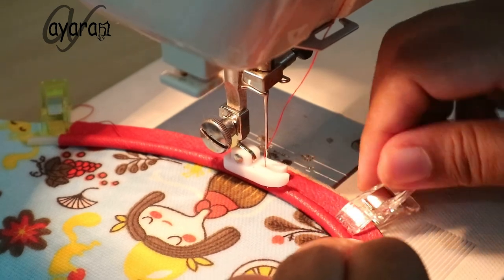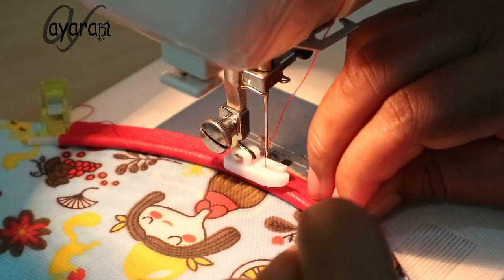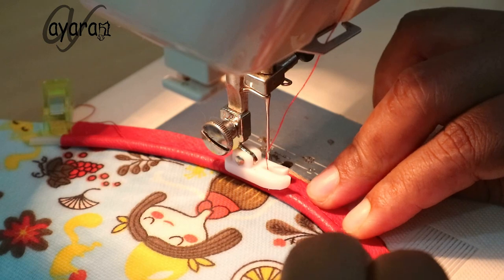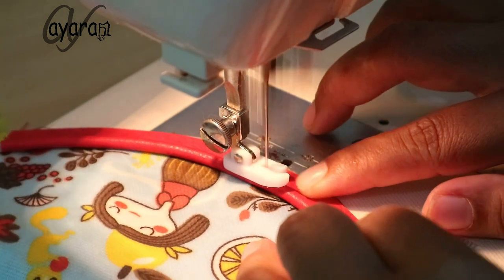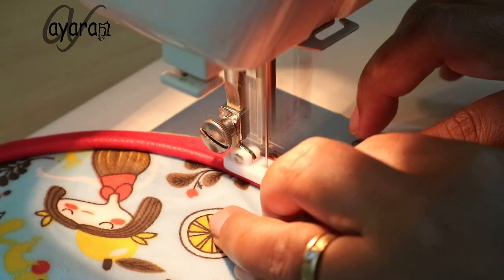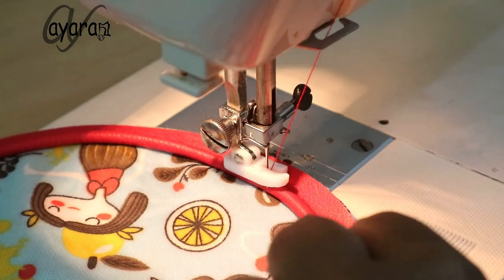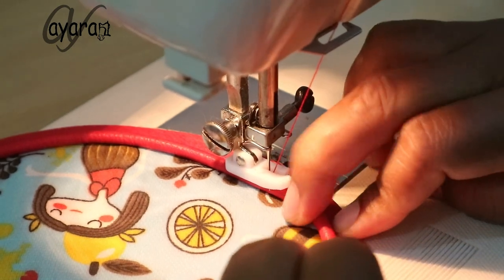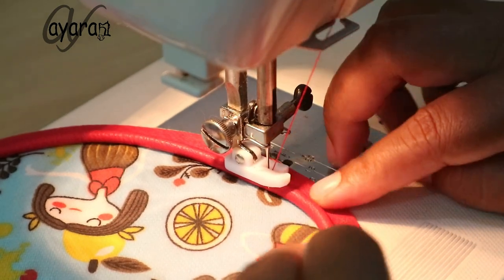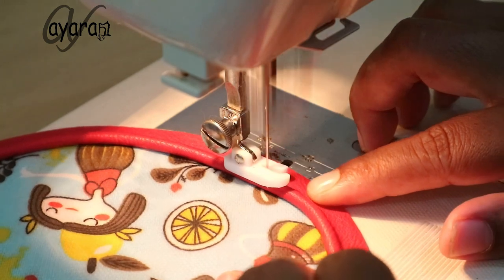The piping bias tape width is three centimeters minus the diameter of the piping cord, so it matches exactly with the fabric edge at one centimeter seam allowance. If you don't want to keep adjusting, you can clip all the way around, especially for curves.